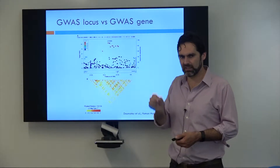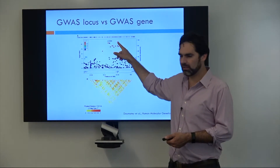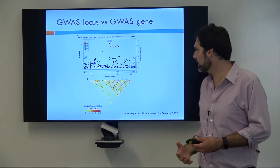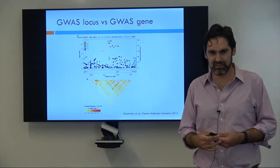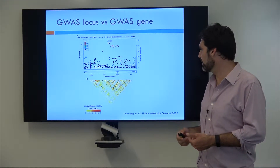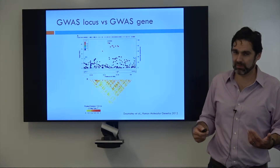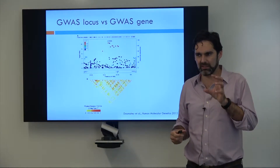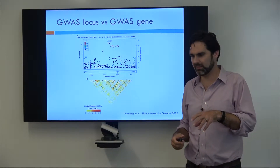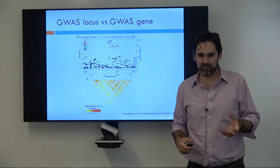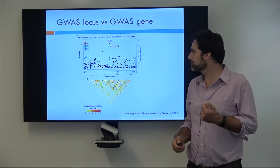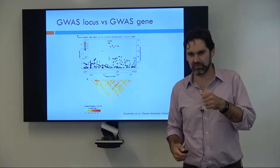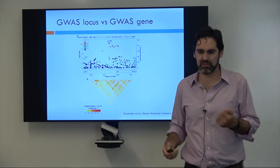This is what makes that strong peak. And figuring out which variant in here is actually driving that signal is called fine mapping, and it's super complicated. It's an active area of research. But what you really need to know from a GWAS is that you're looking for these clumps of significantly associated variants — called a GWAS locus or a risk locus — and usually the variant with the strongest apparent effect in that locus is called the top hit.